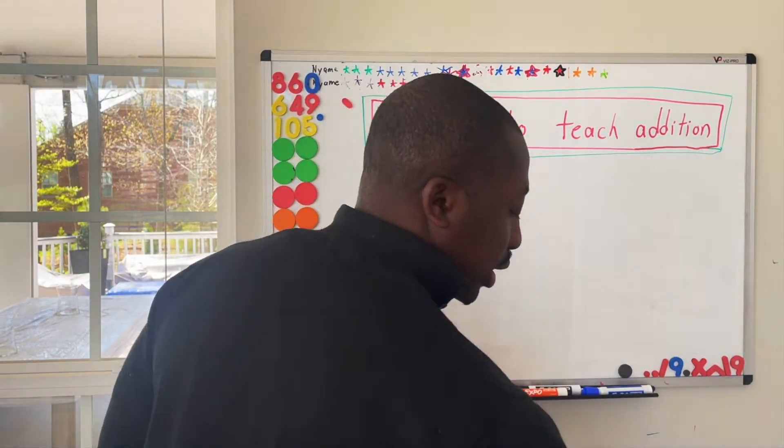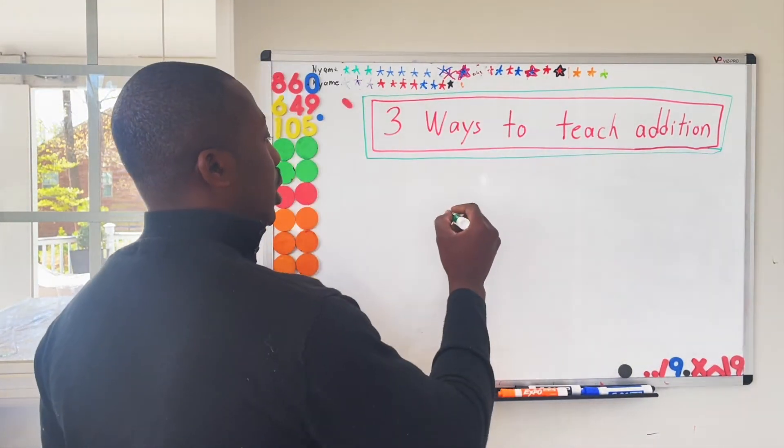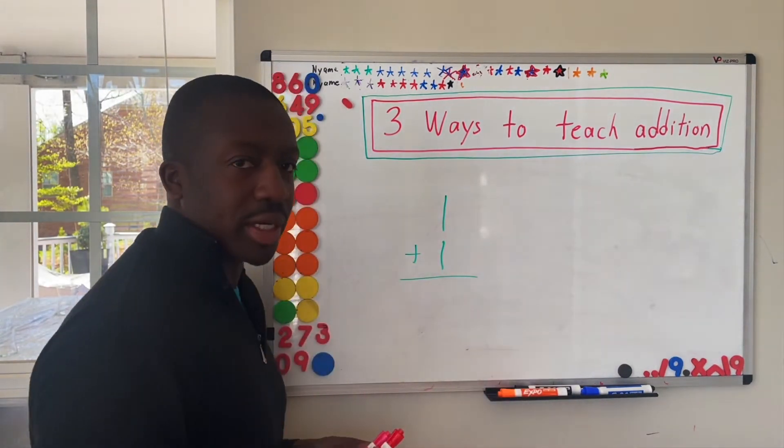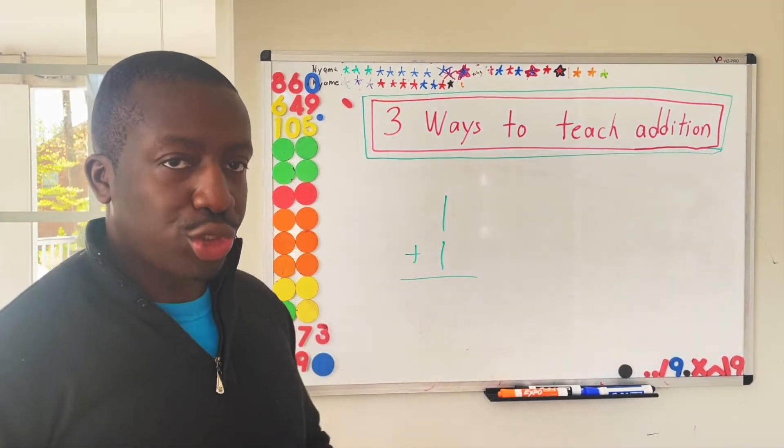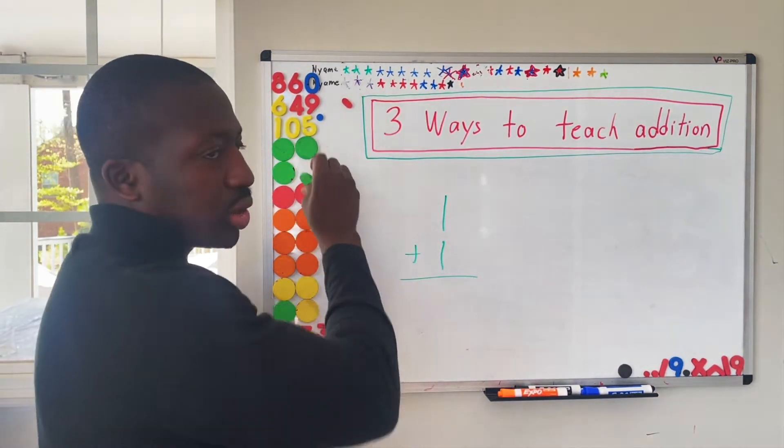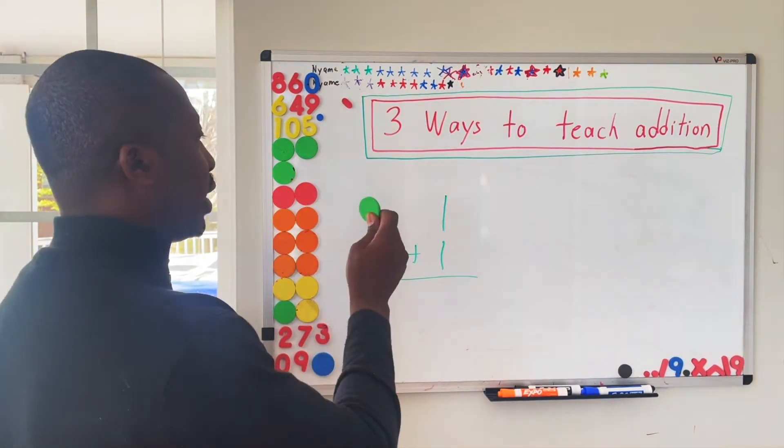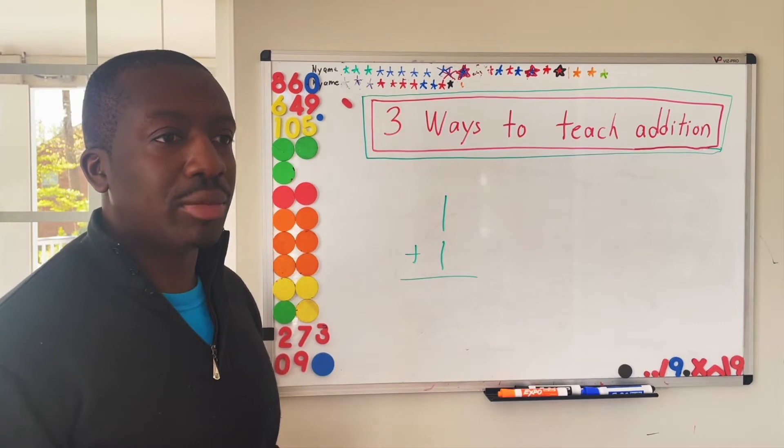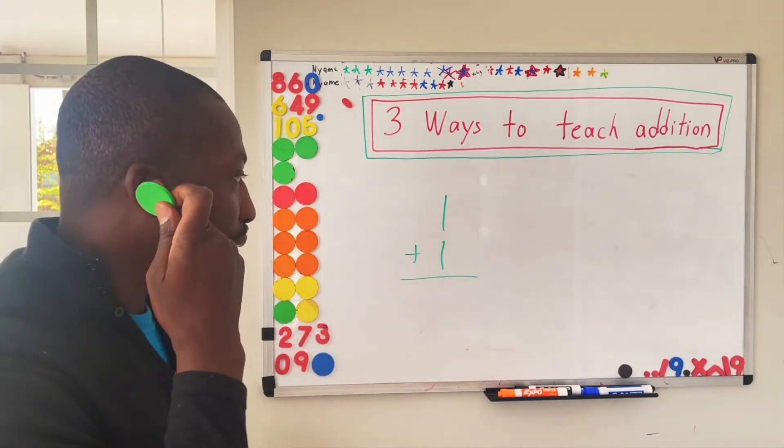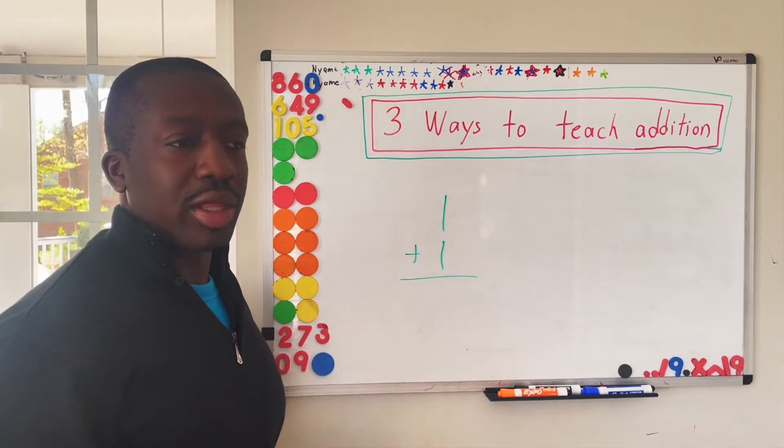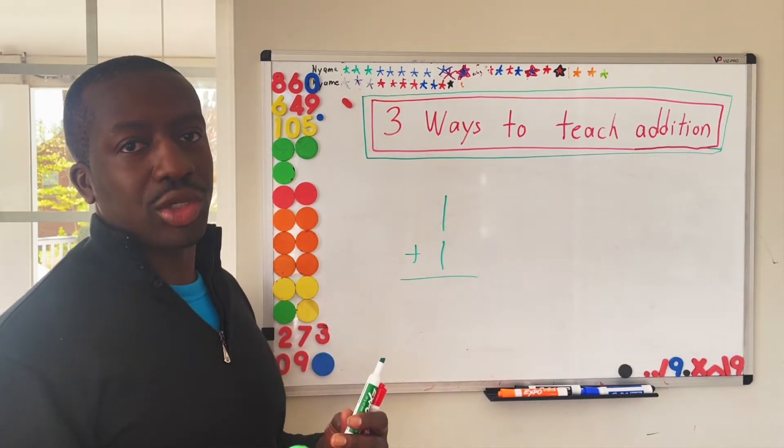Just as a prerequisite to addition, a child needs to know something called one-to-one correspondence. A child should know that this number one corresponds to exactly one object. If a child does not know this, then you need to back up, make sure that they understand that concept before you even try to teach addition. Because without that concept, these are just symbols that have no numerical representation.